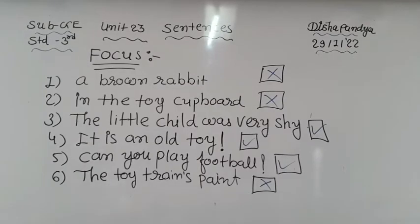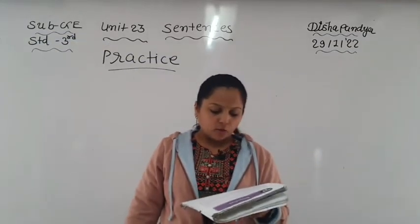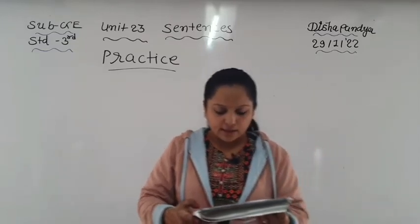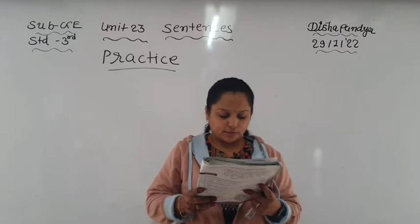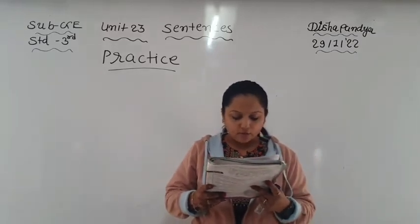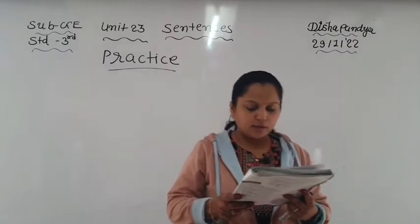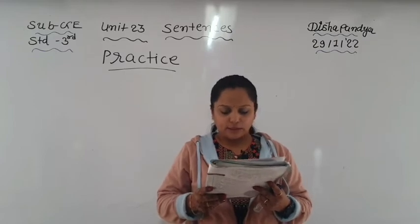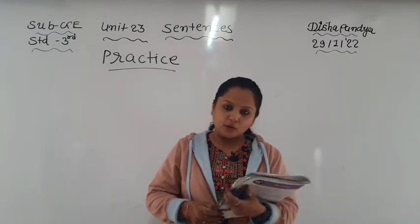Please write down in your GE book. Now move forward to practice exercise, question number A. Look at what Jaya is saying: 'I am Jaya. I live in a village with my father, mother, and brother. I help my family in the farm. What is your name? Where do you live? Do you help your family too?' This means Jaya is asking you questions about yourself.